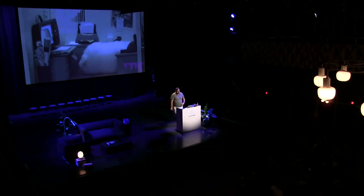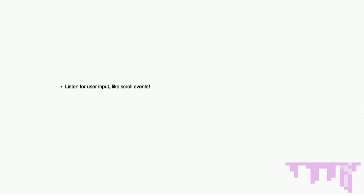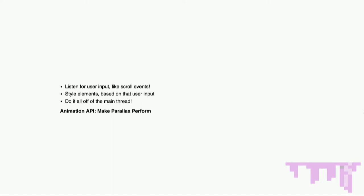Things get a little fuzzier from here. We're going to talk about specs that have changed enough over the past month that they don't have any working implementations anywhere — not even in Canary. The first really cool thing is the CSS Animation API. Because — yo dog — I heard you all like parallax. The animation API lets you listen for user inputs like scroll events and style elements based on that input. Because it's done with the worklet, it's all off the main thread. No more jank for your users for this type of effect. It's really going to make parallax perform — something I won't yell at my designers for wanting.